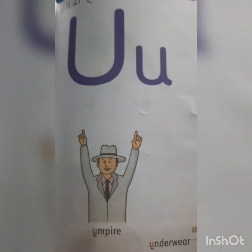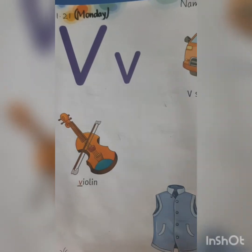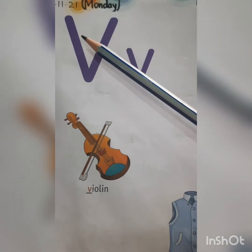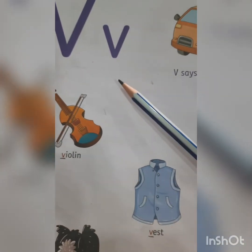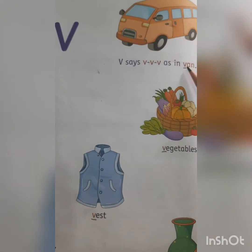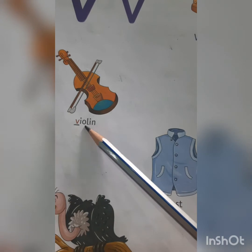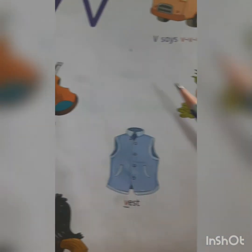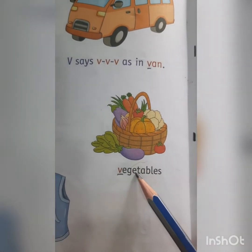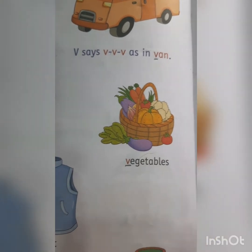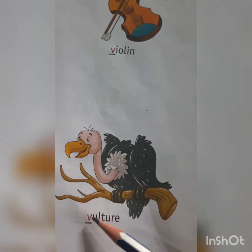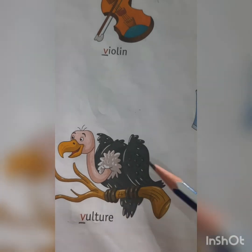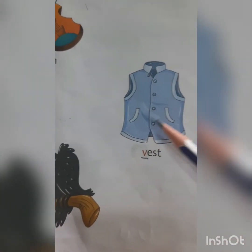Let's see the next letter — which letter comes after U? It is letter V. This is capital V. This is small v. What is the sound of letter V? It's 'V' in van. V-A-N. Van. V-I-O-L-I-N. Violin. V-E-G-E-T-A-B-L-E-S. Vegetables. Let's see the next picture — what is this children? Vulture. V-U-L-T-U-R-E. Vulture. V-A-S-E. Vase.